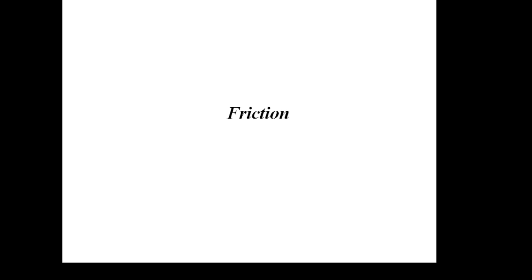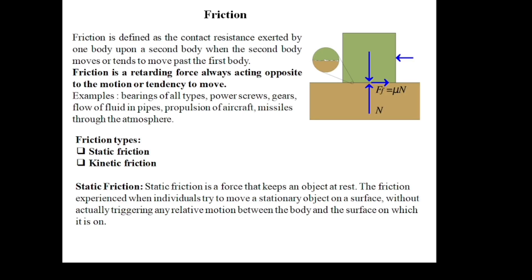Today we will discuss friction. Friction is defined as the contact resistance exerted by one body upon a second body when the second body moves or tends to move past the first body. Friction is a contact force — it is a retarding or opposing force, always acting opposite to the motion or tendency to move. When two rigid bodies are in contact and the second body moves over the first, the applied force and friction act in opposite directions.